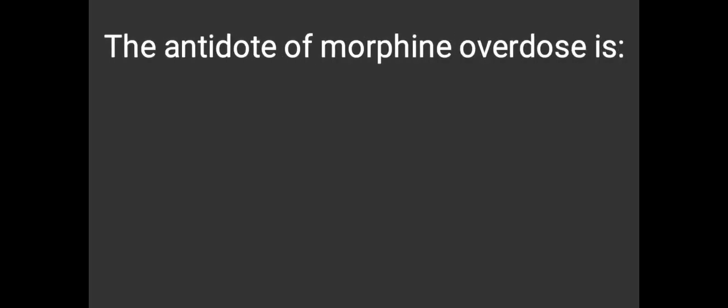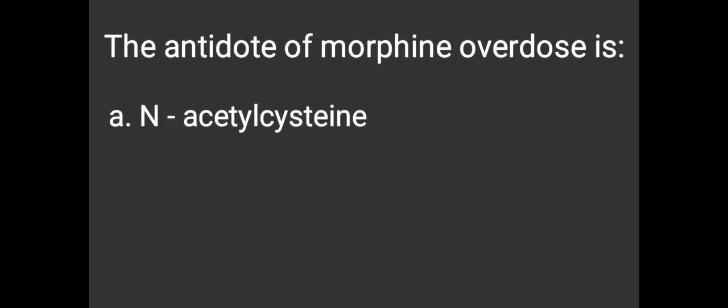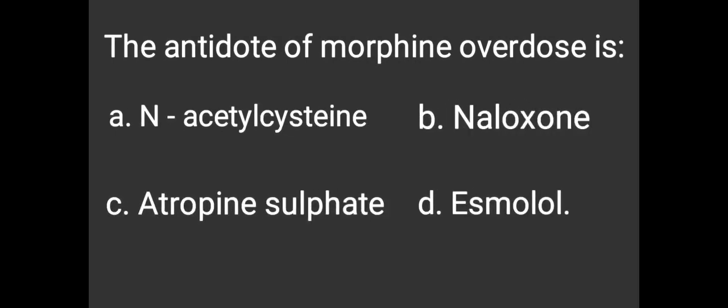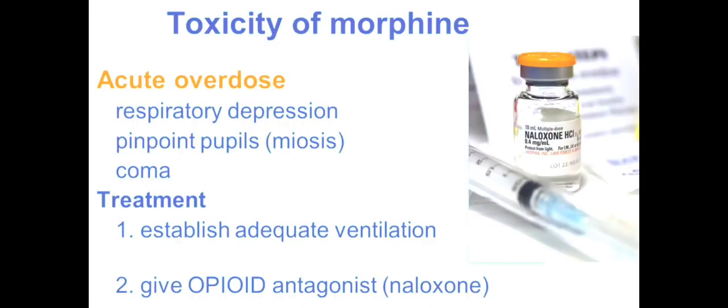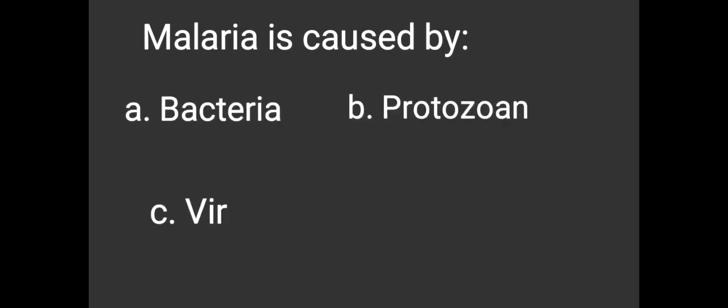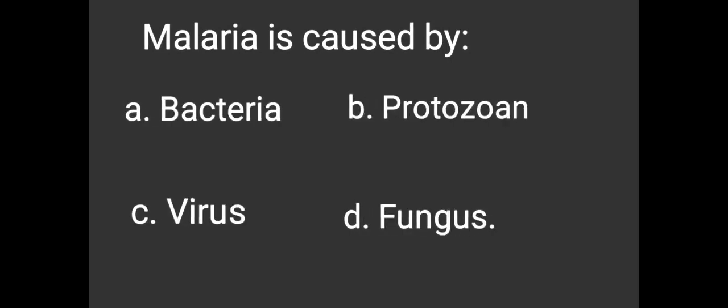The antidote of morphine overdose is: A. N-Acetylcysteine, B. Naloxone, C. Atropine sulfate, D. Esmolol. The answer is B. Naloxone. Malaria is caused by: A. Bacteria, B. Protozoan, C. Virus, D. Fungus. The answer is B. Protozoan.